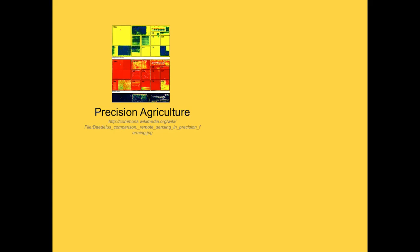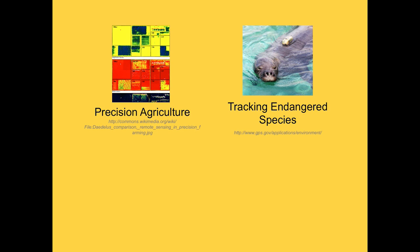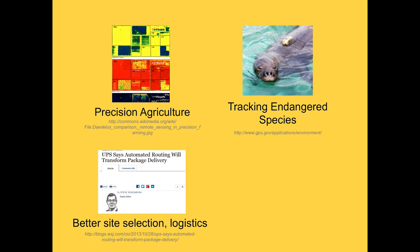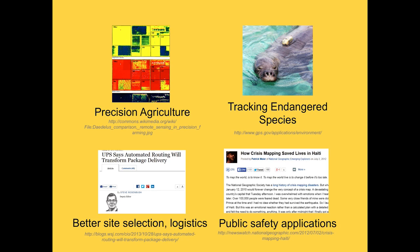Spatial computing is also changing people's lives in a large number of indirect ways. For instance, through something called precision agriculture, spatial computing is revolutionizing how farmers grow our food. Similarly, scientists are using spatial computing technologies to better track and protect the world's biodiversity. Large organizations are using spatial computing to minimize pollution and increase profits at the same time. And public safety officials are using spatial computing to reduce crime and save lives during natural disasters.